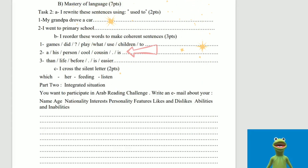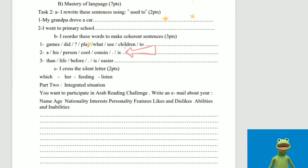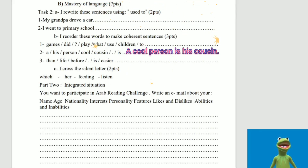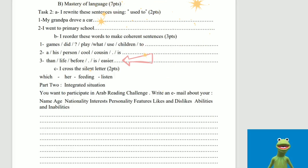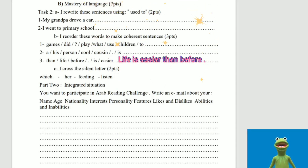Two: a, his, person, cool, cousin, full stop, is. The answer: A cool person is his cousin. Three: van, life, before, full stop, is, easier. The answer: Life is easier than before.